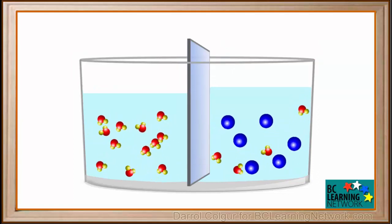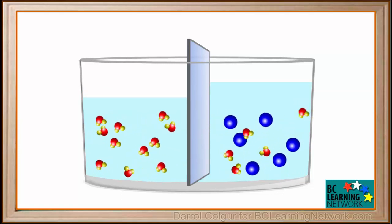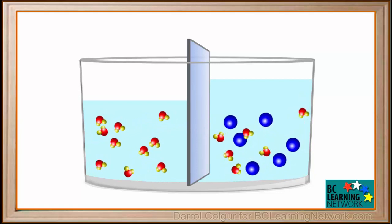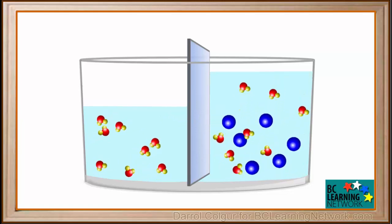As the water moves into the right chamber, the volume in the right chamber increases, while the volume in the left chamber decreases. Watch how they change. The concentration of water is now equal on both sides. Equilibrium has been reached.